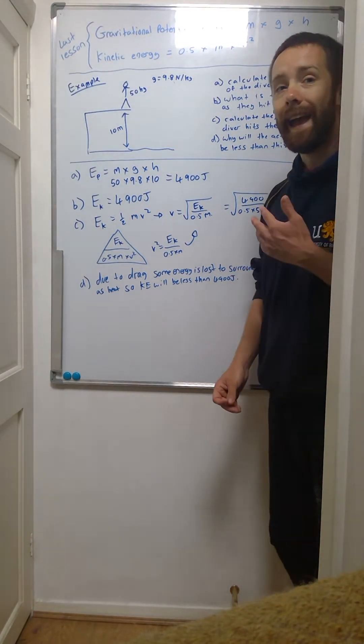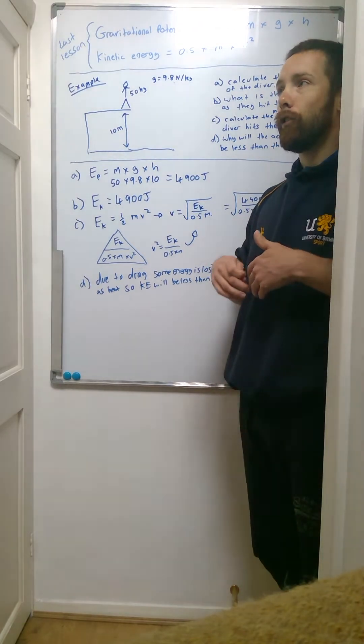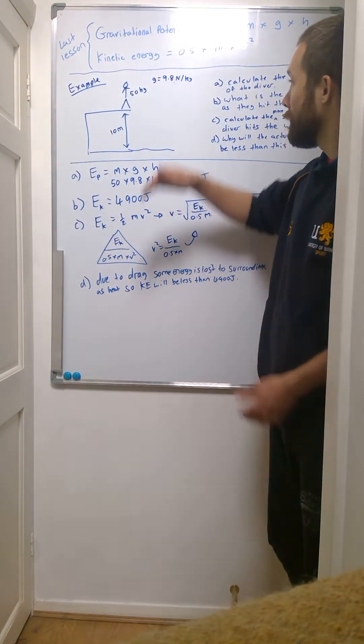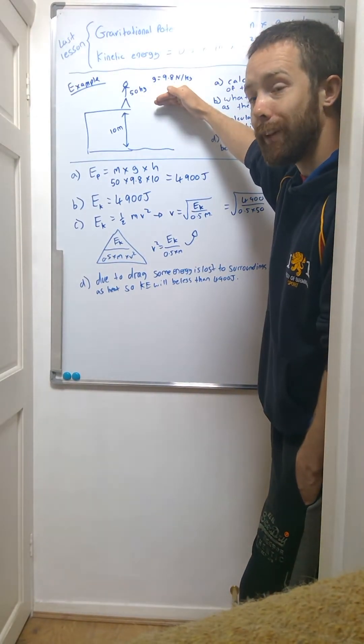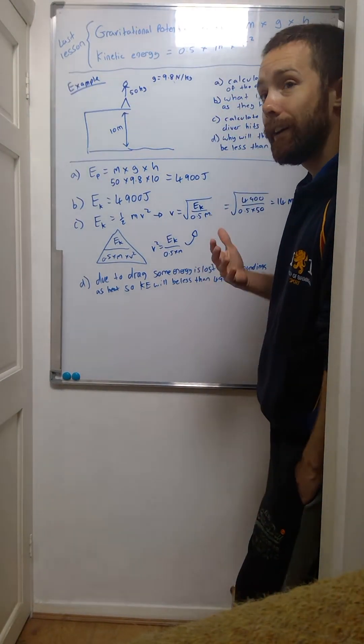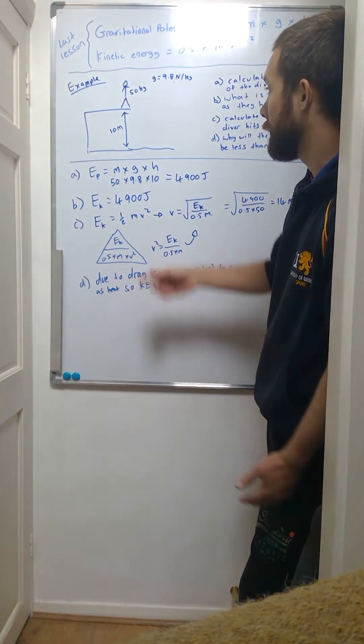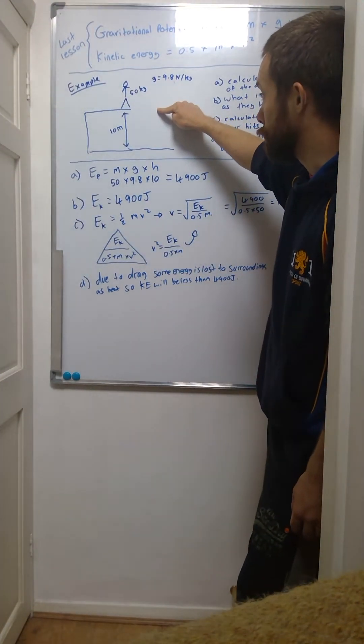So if the diver has 4,900 joules of energy at the top, and then assuming that no energy is lost to the surroundings or anything like that, that 4,900 joules of energy is going to get converted into kinetic energy.